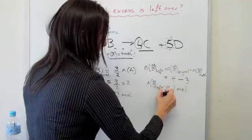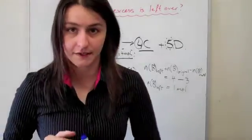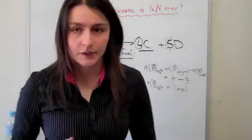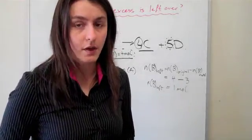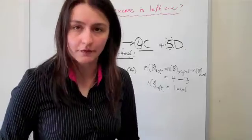So this is our excess amount. This is how much B is actually in excess. Then if this was a practical example, you can convert that into other formats such as mass or volume or whatever kind of information you're given.